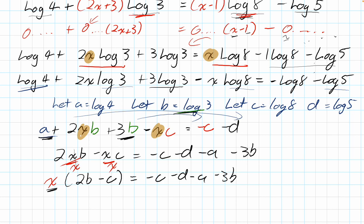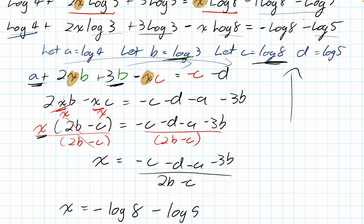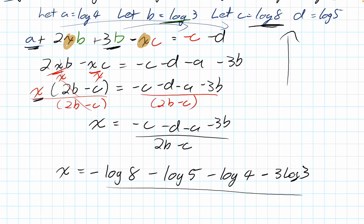2b minus c. These disappear. Finally, x is by itself. It is equal to a heck of a lot of letters. Minus c, minus d, minus a, minus 3b over 2b minus c. What does that mean? I don't really know. But I can go back in and put my logs. It's going to be a bunch of logs. You're going to need your calculator to figure it out in the end. And we'll substitute to get our final answer. But sometimes changing things into simplistic variables might be a little easier. So, I got to go to my reference sheet here. C was log 8. So, I got negative log 8. D was log 5. So, minus log 5. A was log 4. Minus log 4. B was 3. So, minus 3 log 3. And then the bottom piece is just 2 log 3 minus log 8. And you have your final answer from a heck of a lot of work there.